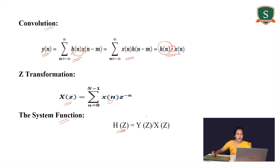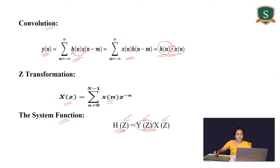If you have any output sequence y(n) and input sequence x(n), you can find Y(z) — the z-transform of the output — and X(z) — the z-transform of the input. Using these two expressions, you can find the system function H(z) using the expression Y(z) divided by X(z), which is the ratio of the z-transform of the output to the z-transform of the input. Using these two parameters, h(n) and H(z), you can characterize any system.